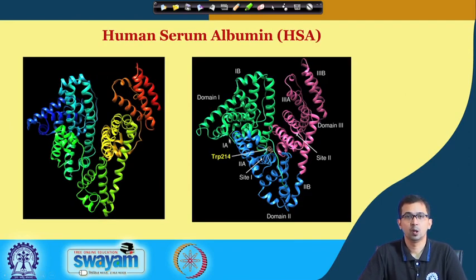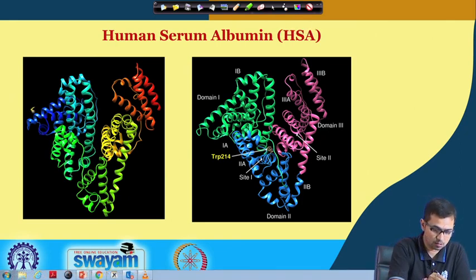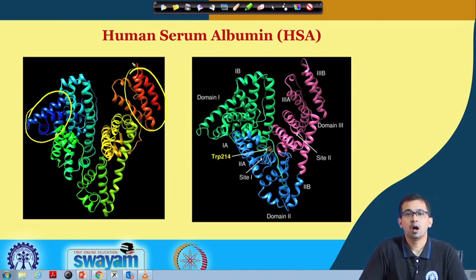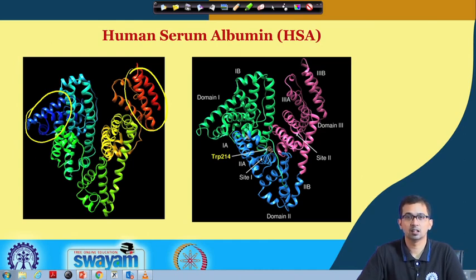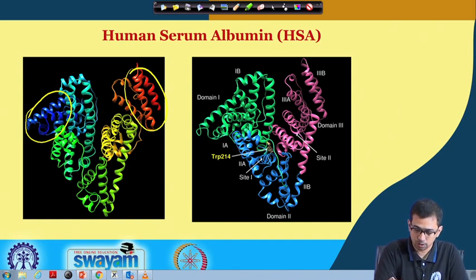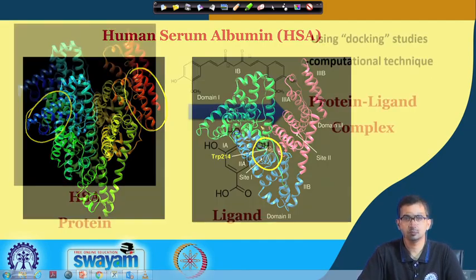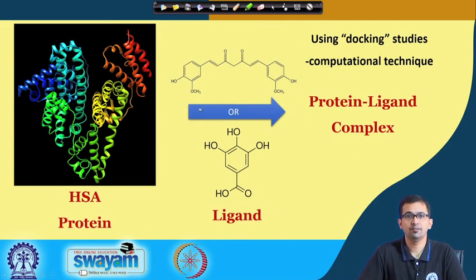This is human serum albumin — it looks quite good in terms of color but the structure is complex. There are several helices present; these are alpha helices. HSA has different types of alpha helices. This protein has a heart-shaped structure with several domains and one tryptophan residue — importantly, it has only one tryptophan residue. We used this HSA protein with two different ligands experimentally, and now we will use computational docking studies.